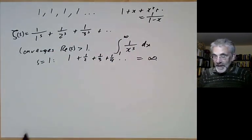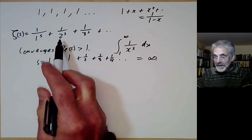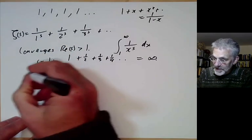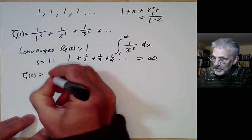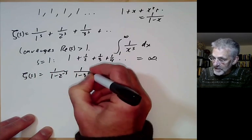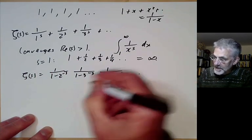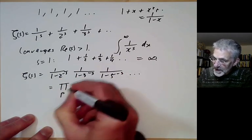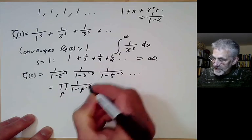Another really useful property of the Riemann zeta function is its infinite product expansion: ζ(s) = (1/(1−2^(−s))) · (1/(1−3^(−s))) · (1/(1−5^(−s))) · … which is the product over all primes p of 1/(1−p^(−s)).